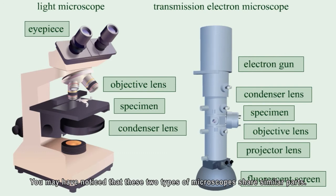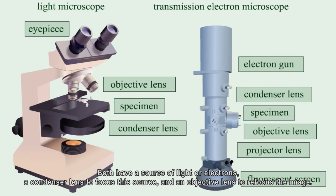You may have noticed that these two types of microscope share similar parts. Both have a source of light or electrons, a condenser lens to focus this source, and an objective lens to refocus the image.